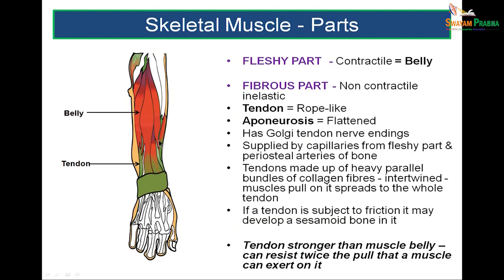Parts of skeletal muscle can be divided into the fleshy part, being the belly, and the fibrous or tendinous part, sometimes expanded to form an aponeurosis. Tendons are stronger than the bellies, so if there is ever an injury of a muscle, it is usually the belly that will rupture rather than the tendon.